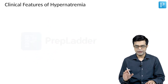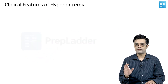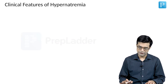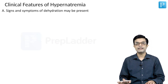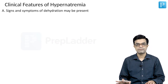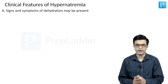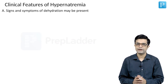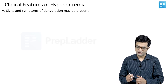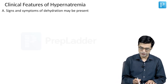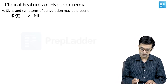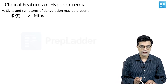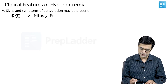Moving towards the clinical features of hypernatremia, the first feature is that sometimes children may have signs and symptoms of dehydration — the usual signs and symptoms of dehydration which you have read previously. The signs and symptoms of dehydration, if present, are usually mild in nature and they tend to appear late.